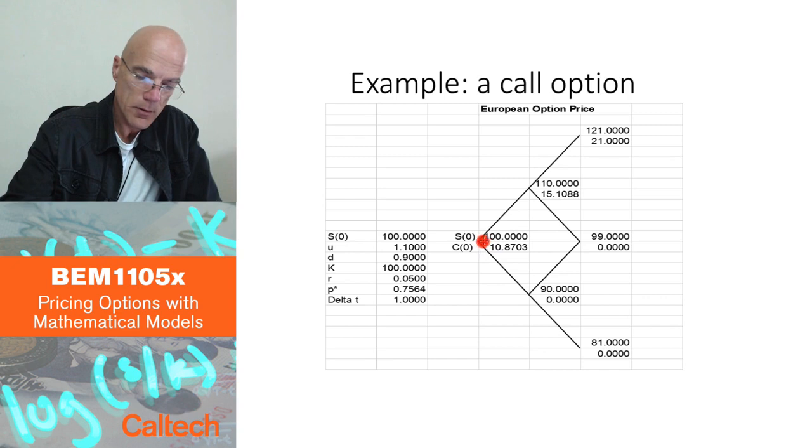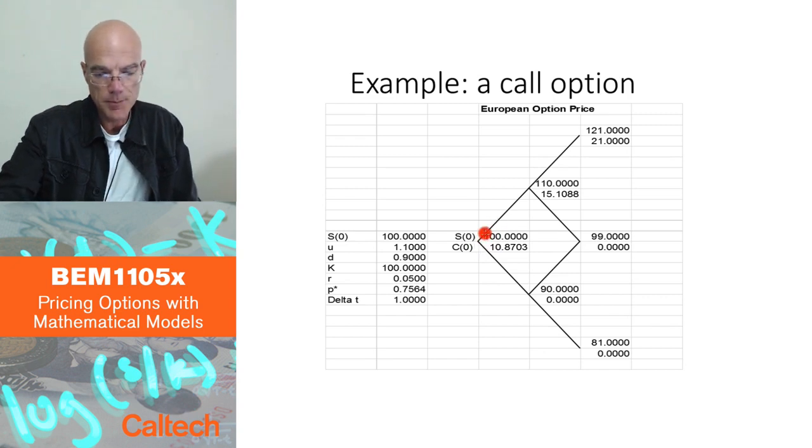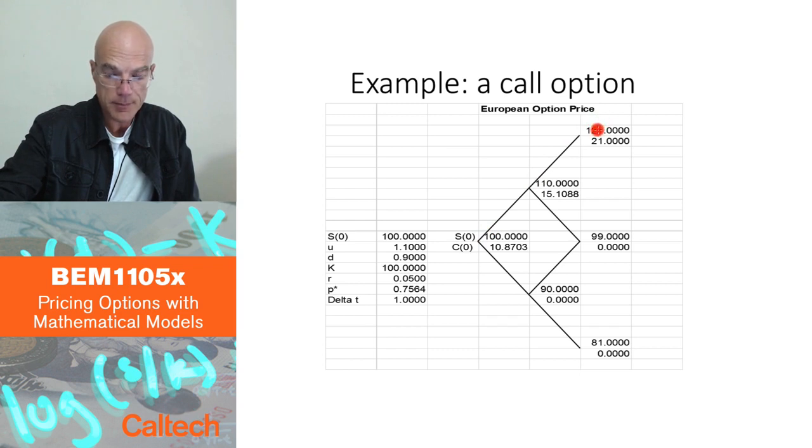Going back again. So first, what do you do? You first compute stock prices. In your model, 100 times 1.1 is 110, times 1.1 is 121. 110 times 0.9 is 99. And then, here, I have 100 times 0.9 is 90, times 0.9 is 81. So the upper values are stock prices. 100, 110, 121, 99, 90 and 81.